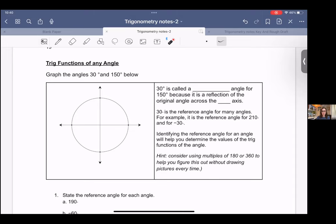We're going to graph the angles 30 degrees and 150 degrees below. So pause it, graph them, come back. 150 degrees is just shy of 180 degrees.